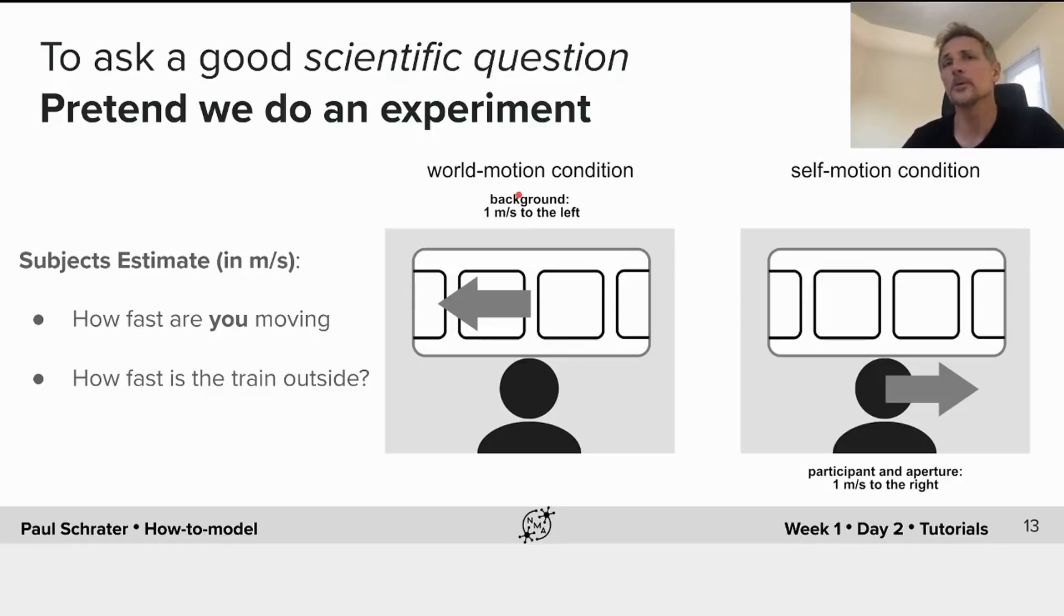Because we don't know what people perceive, we're going to ask them to make two decisions. The first decision is an answer to a question in which they'll move a slider to tell us how fast you feel you are moving. In a separate question, with a separate slider, we'll ask them, how fast is the train outside?